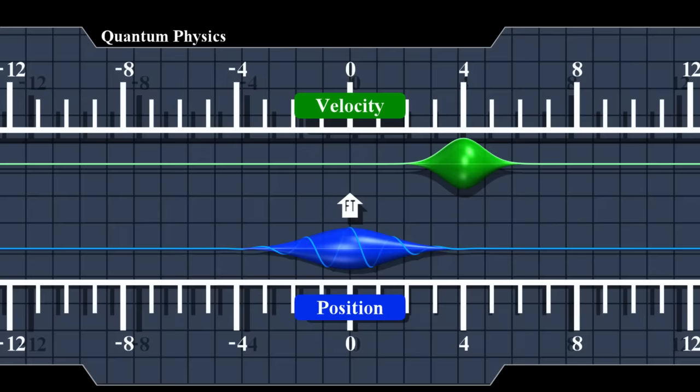The peak of the wave is at 4 units, meaning the particle's most likely velocity is 4 units per second. But it's not the only velocity our particle can have. As before, we don't know its exact velocity, only the probability distribution.